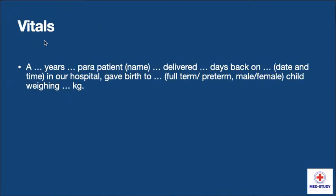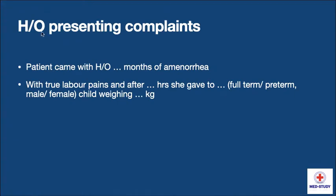First we have to take vitals such as age of the woman, name of the woman, date and time of delivery, and whether she gave birth to a full term or preterm baby, male or female child, and the birth weight, for example 3 kg or 2 kg. Now coming to history of presenting complaints.